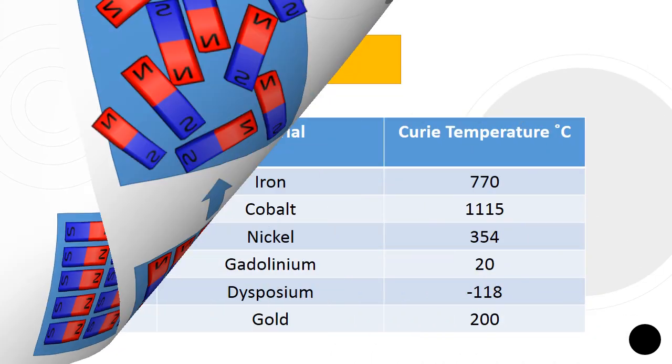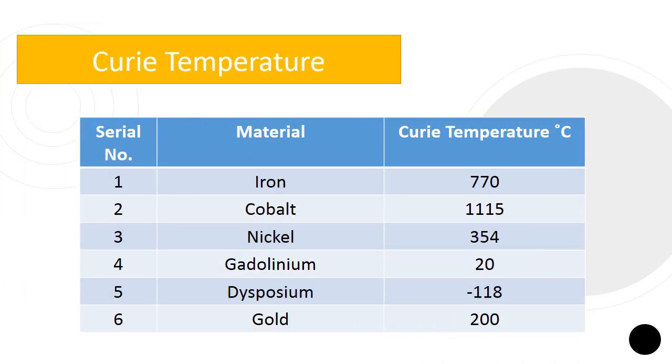The precise temperature above which ferromagnetic materials cannot be magnetized is known as the Curie temperature. Iron has a Curie temperature of 1043 K, 770 degrees centigrade, which is significantly higher than room temperature. Numerous elements and alloys only become ferromagnetic below Curie temperatures that are significantly lower than room temperature.